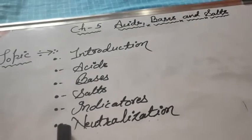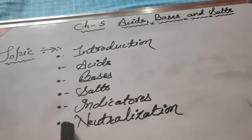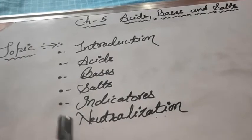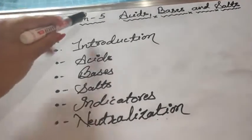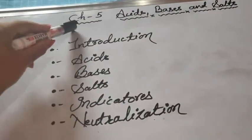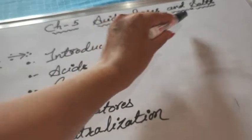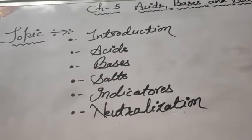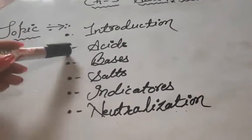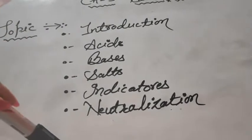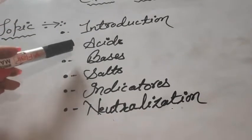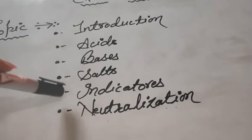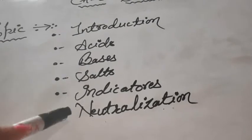Good morning to all of you. Today we are going to start the next chapter — Chapter 5: Acids, Bases and Salts. In this chapter we will discuss the following topics: introduction, acids, bases, salts, indicators, and neutralization.